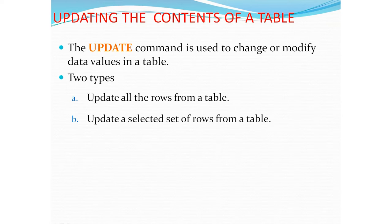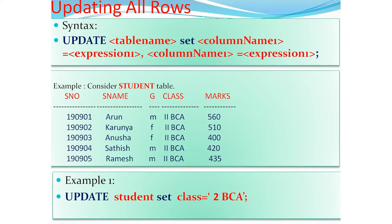For the first type, updating all rows — what does it mean? In our entire table, imagine we have a hundred number of records, and for each and every record we have to make a similar change. In that case, the operation falls under the category of updating all rows.